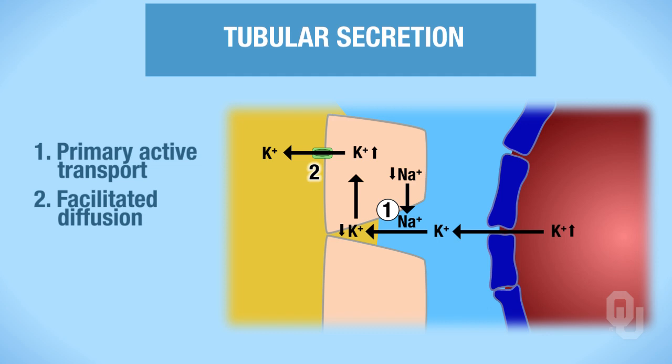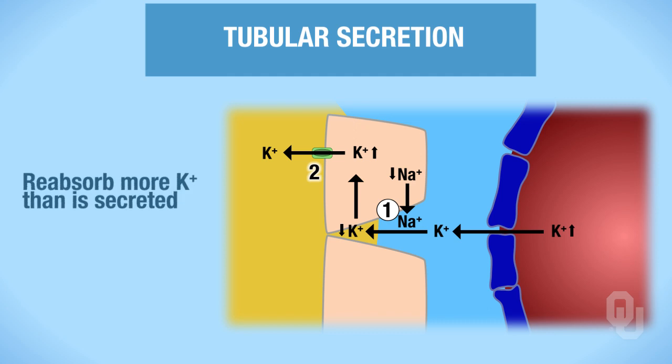We've talked about potassium reabsorption in the proximal convoluted tubule, and we've also now talked about potassium secretion in the distal convoluted tubule and the collecting ducts. So we're both reabsorbing and secreting potassium—a little odd, right? Think about the net effect: we are going to reabsorb more potassium than what gets secreted. Let's take a look at how that happens.